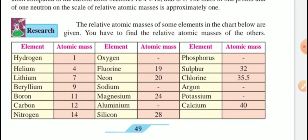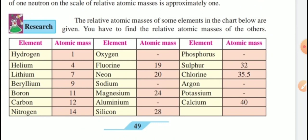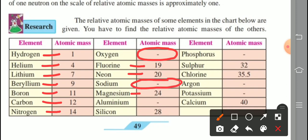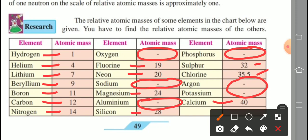The relative atomic masses of elements are given in a table. Some values: hydrogen 1, helium 4, lithium 7, beryllium 9, boron 11, carbon 12, nitrogen 14, oxygen (fill in), fluorine 19, neon 20, sodium (homework), magnesium 24, aluminium (homework), silicon 28, phosphorus (homework), sulfur 32, chlorine 35.5 — note that chlorine's atomic mass is fractional — argon and potassium (homework), calcium 40. Try to find the missing atomic masses; answers will be given in the assignment.